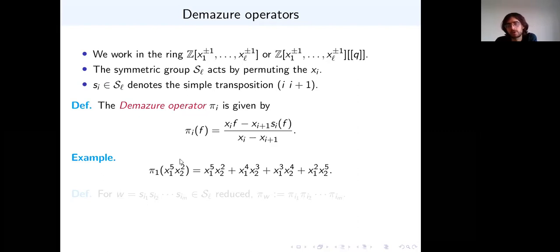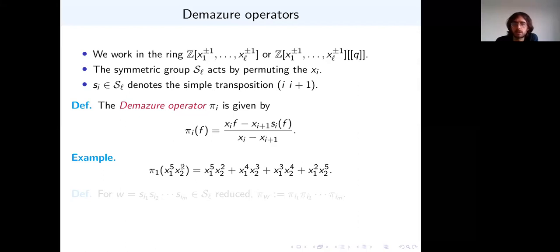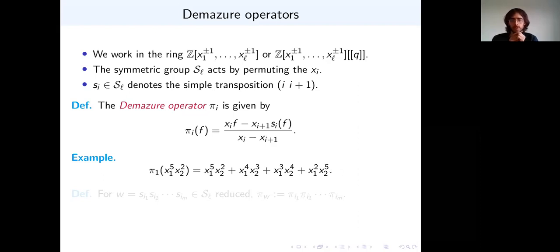To get an idea of what the Demazure operator does, it's enough to see what it does to monomials. It only acts in two consecutive variables at a time. For example, if I have a monomial with exponent vector (5,2), that's going to go to the exponent vector (5,2) and then the flip of it, and then everything in between — that's the general pattern.